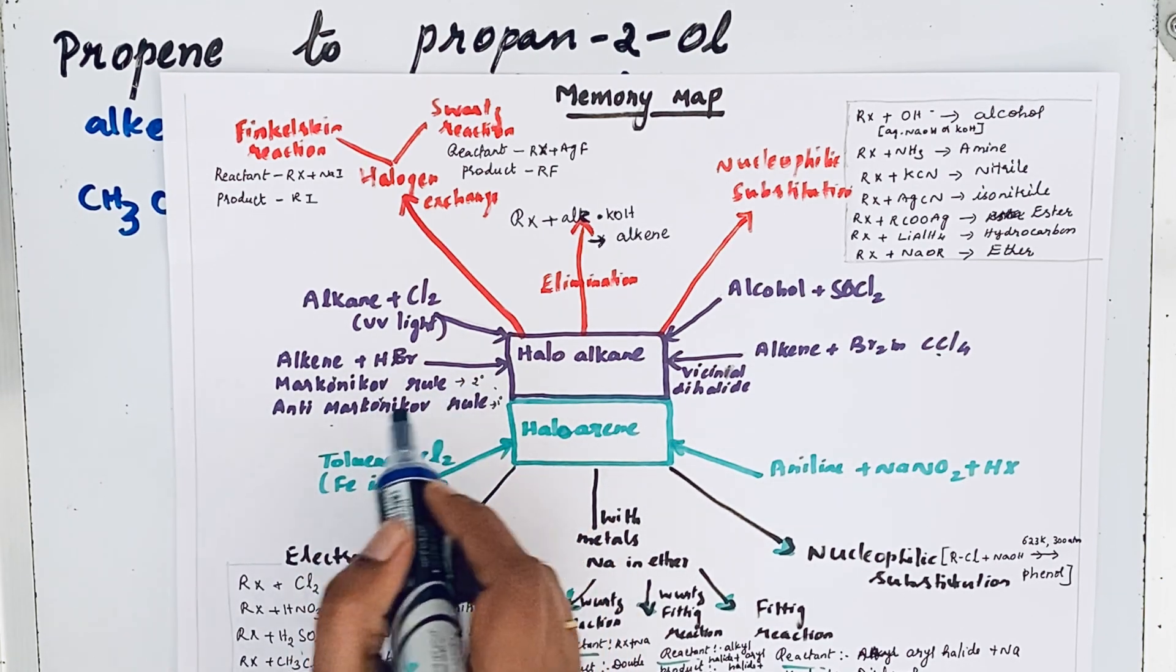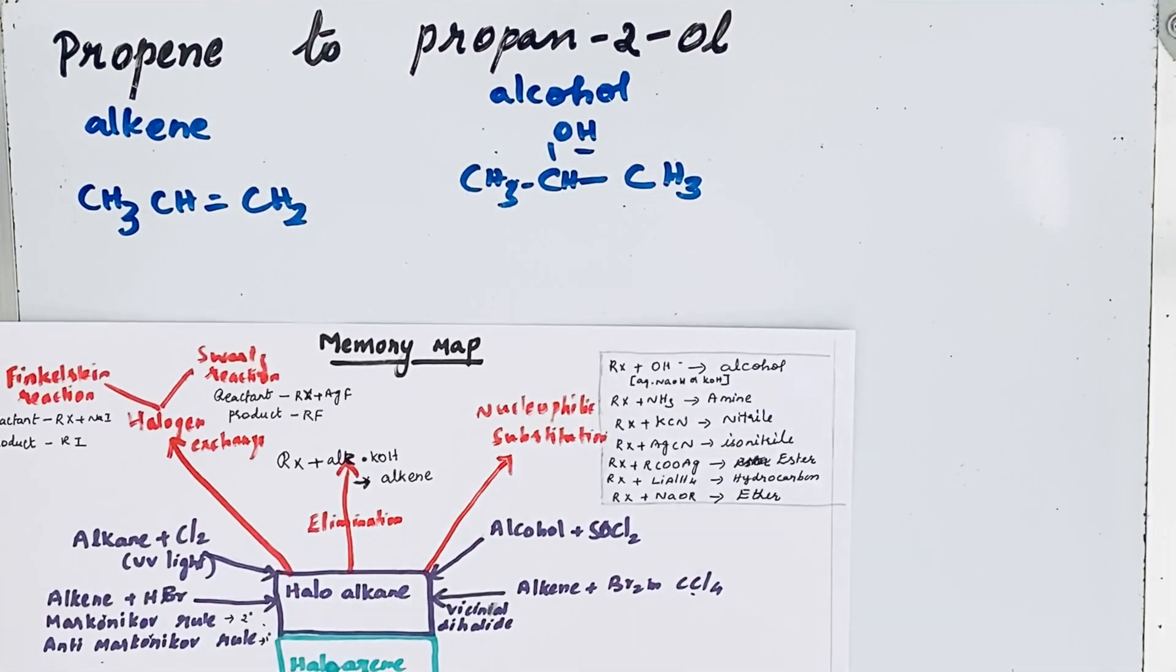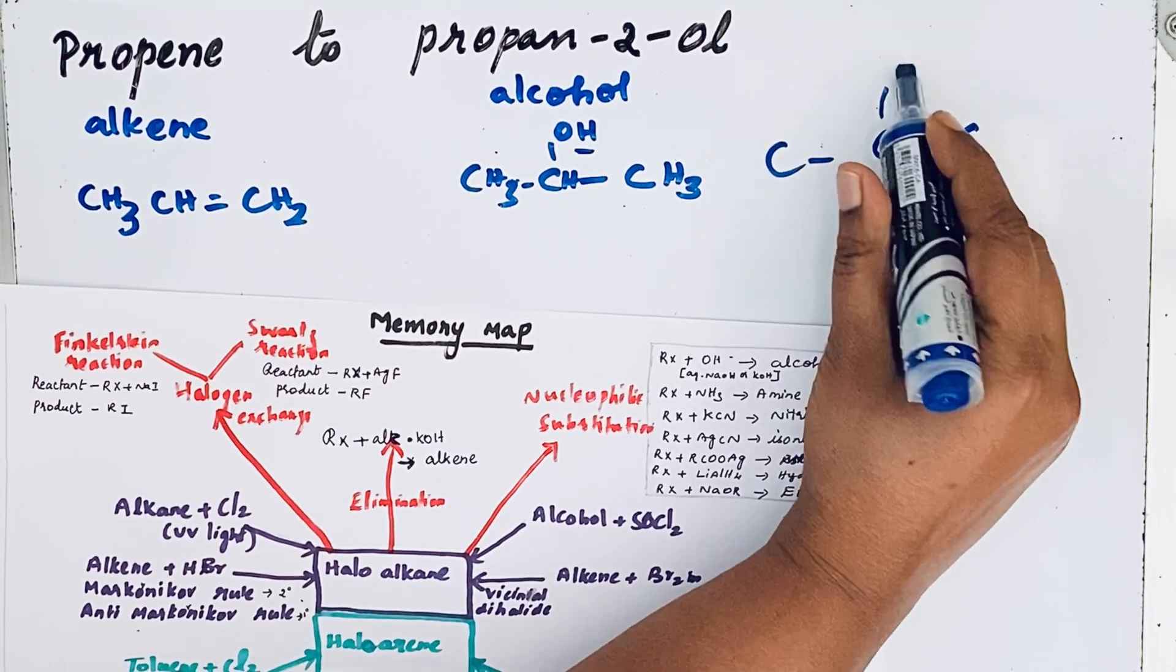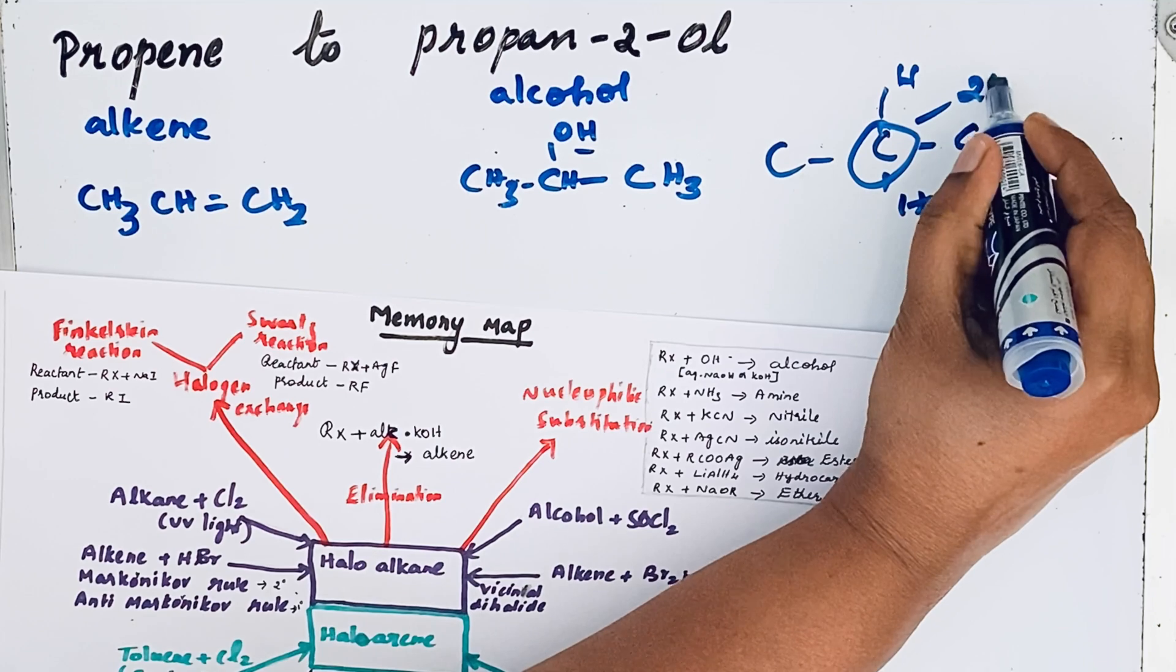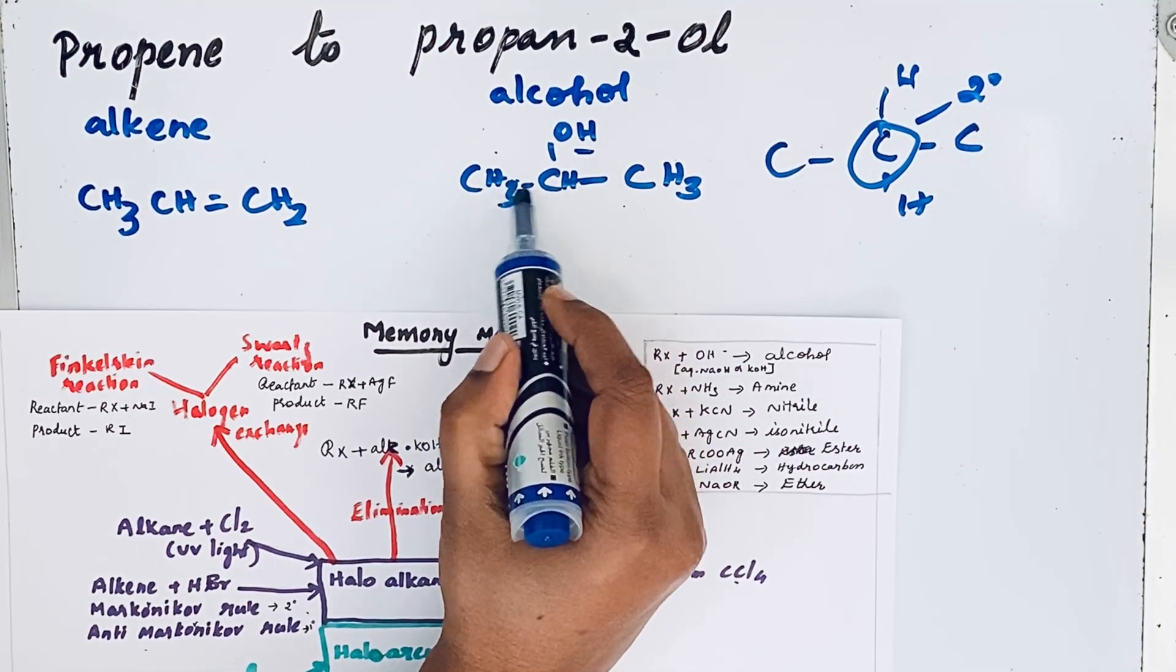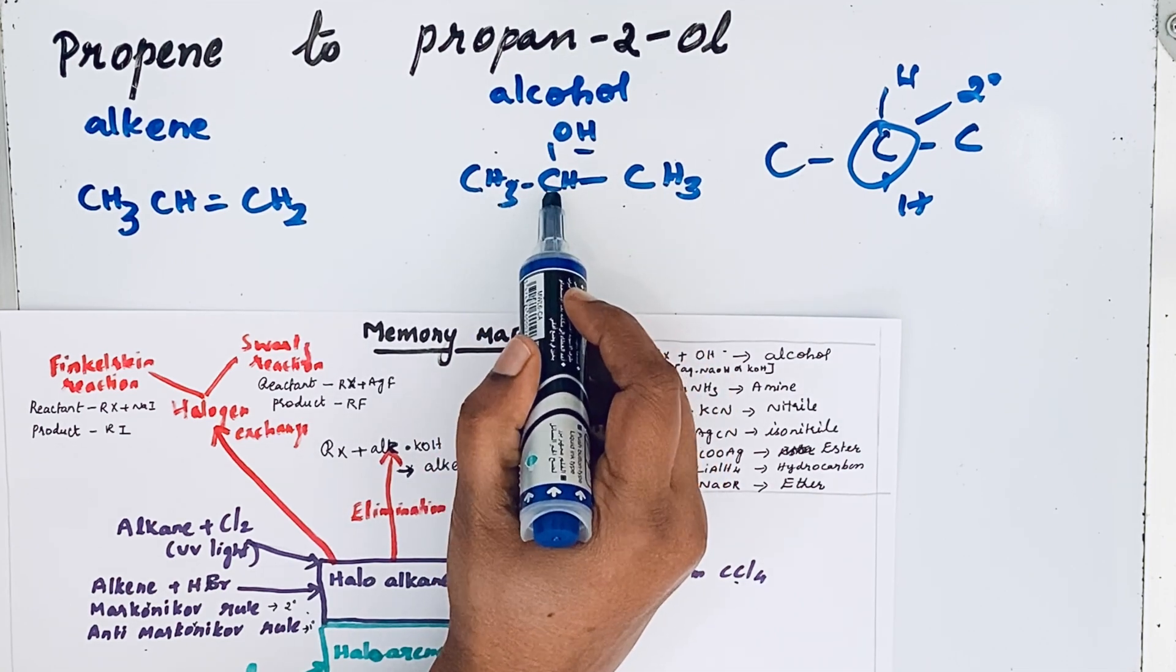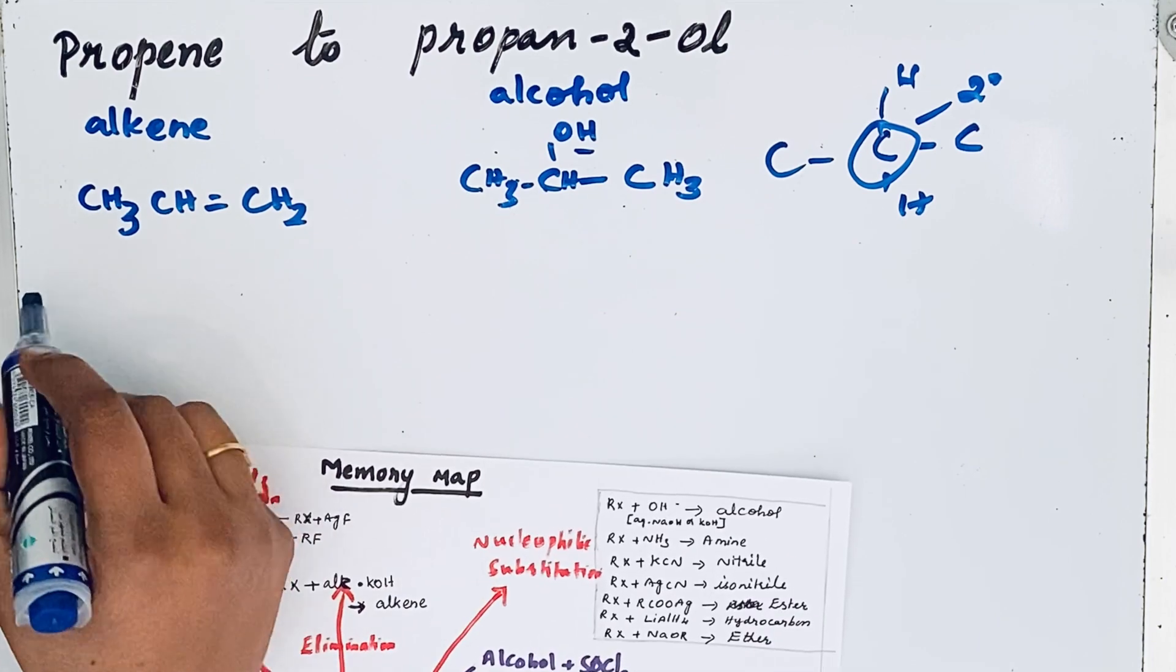If you want that secondary, then Markovnikov's rule. What is secondary carbon? If any carbon is attached to two other carbons, then we call that as a secondary carbon. So this is a secondary group. If you see that in propan-2-ol, this carbon is attached to two other carbons, so it is a secondary carbon.